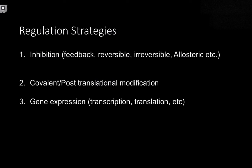For more fine-tuning type of methodologies, we have reversible inhibition. For shutting off an enzyme completely, we have irreversible inhibition. And then lastly, allosteric inhibition, which affects the KM and modifies the shape of that sigmoidal curve.